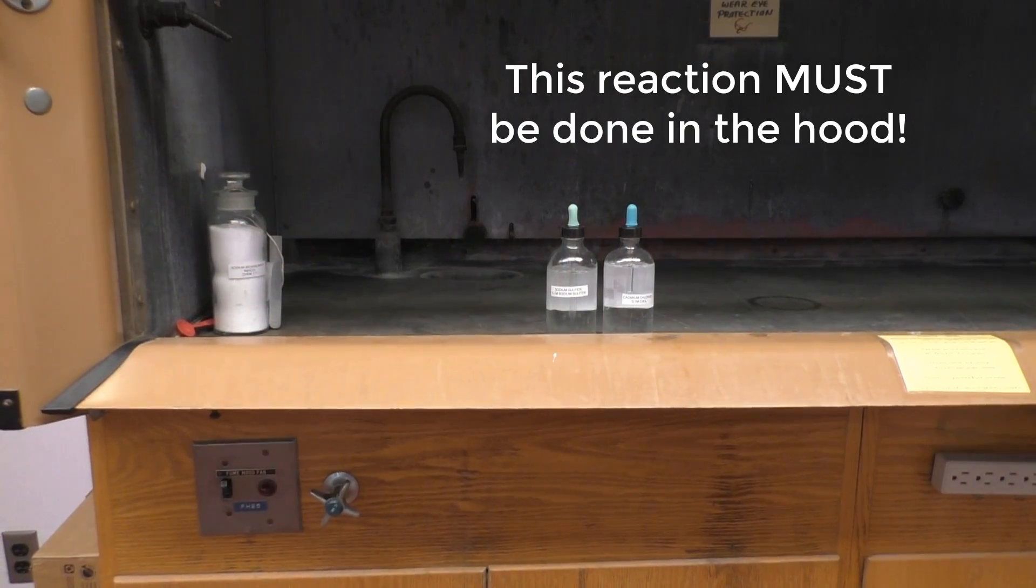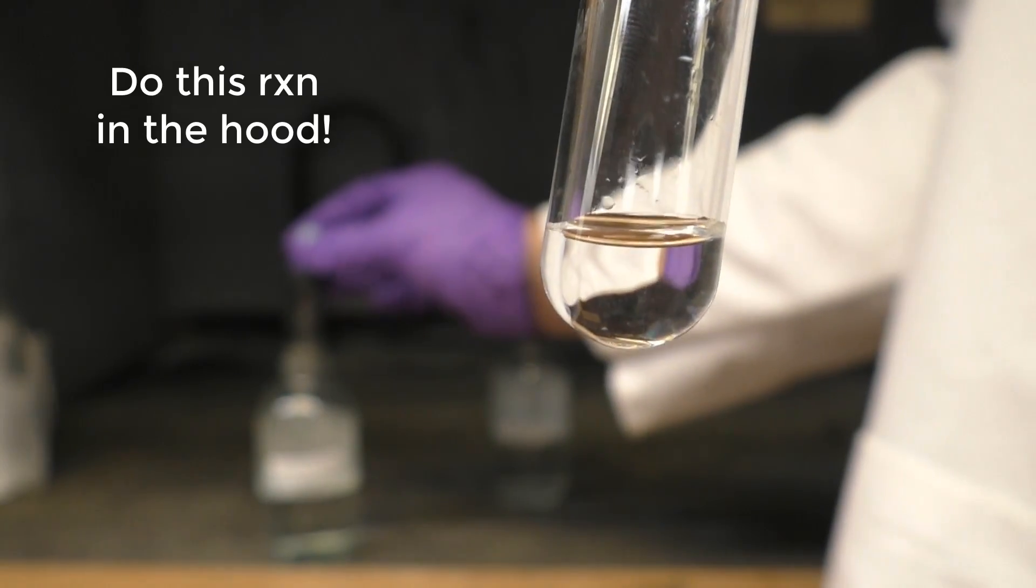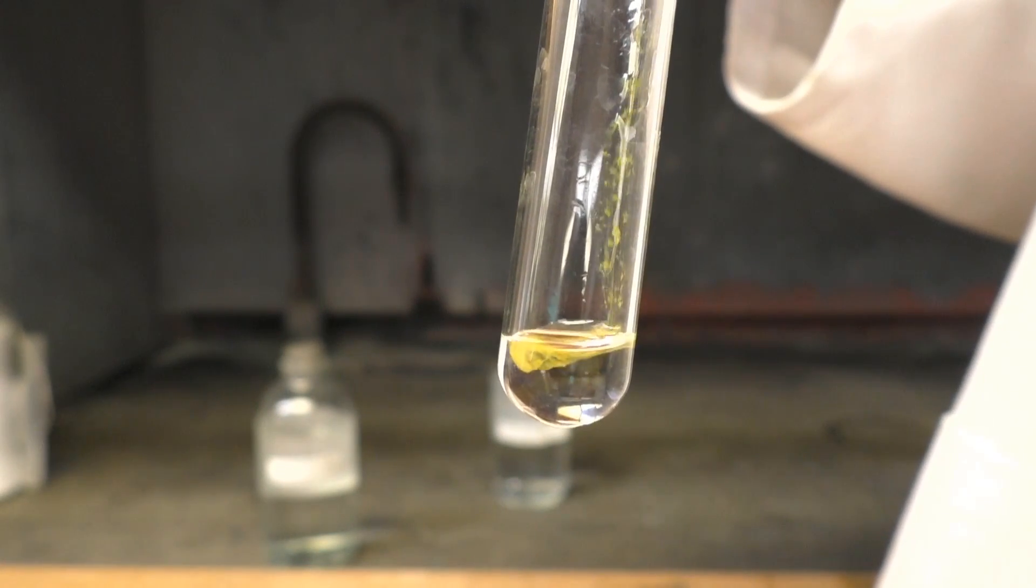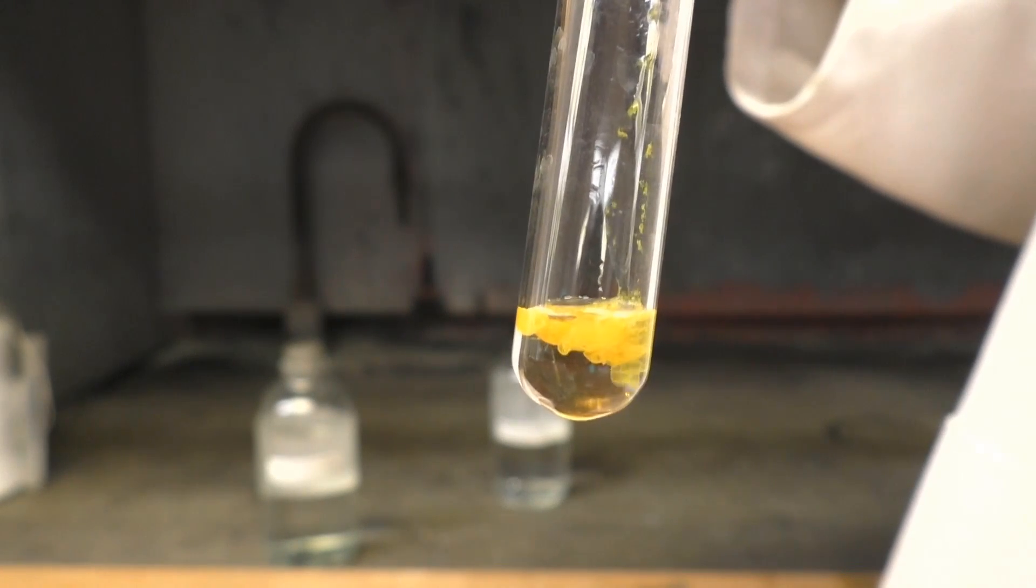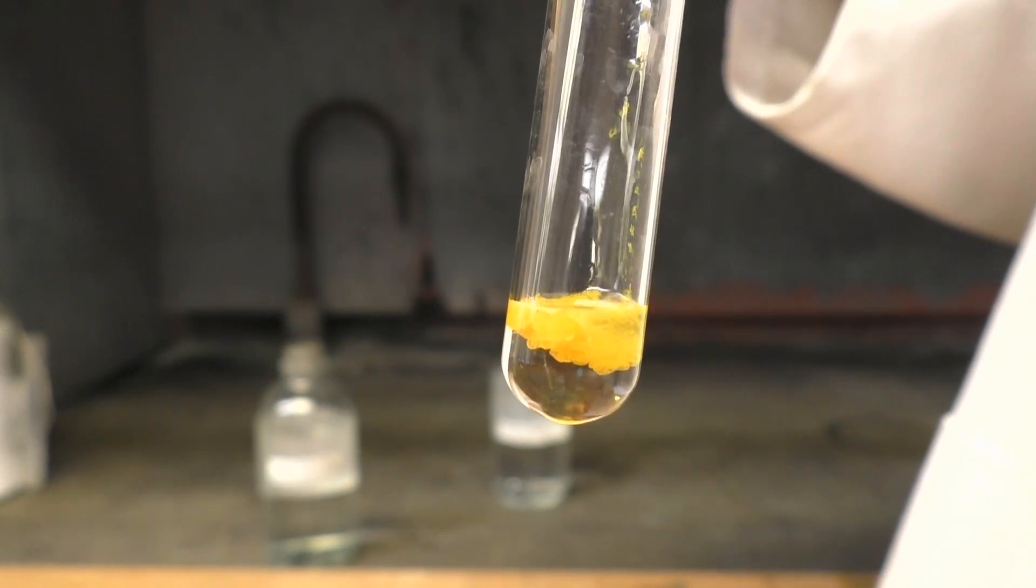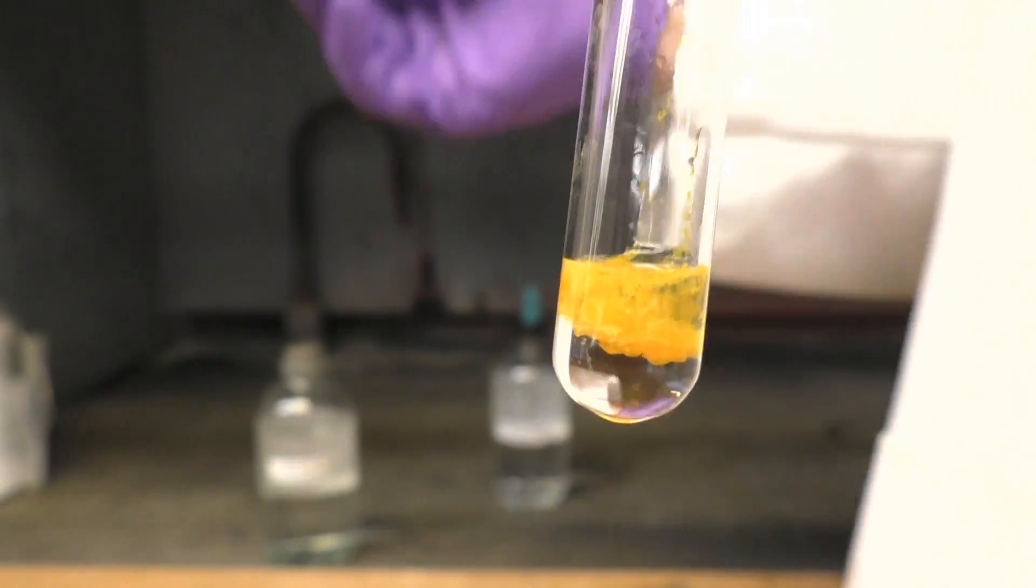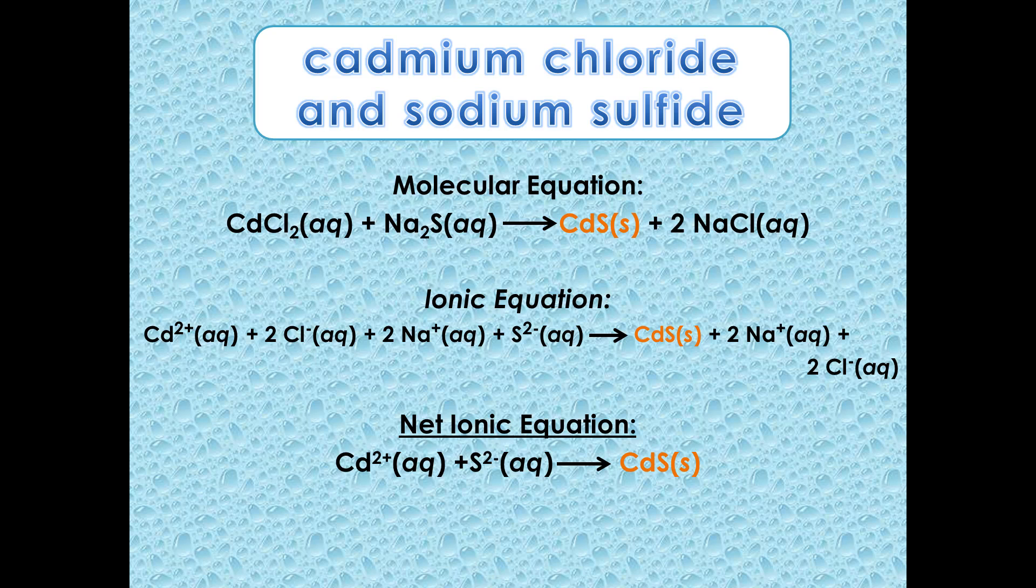Our last demo is the precipitation reaction between cadmium chloride and sodium sulfide. Look at how the tube becomes cloudy as we add the second reagent. This is the formation of the precipitate or solid product. So what compound is that product? Once again, writing out the molecular, ionic, and net ionic equations for cadmium chloride reacting with sodium sulfide shows the formation of solid cadmium sulfide, CDS.